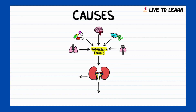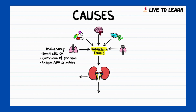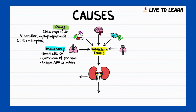So what leads to SIADH? It could occur due to malignancies such as small cell carcinoma, carcinoma of the pancreas, or due to ectopic ADH secretion. Drugs such as chlorpropamide, vincristine, cyclophosphamide, carbamazepine, and clofibrate can also cause SIADH.